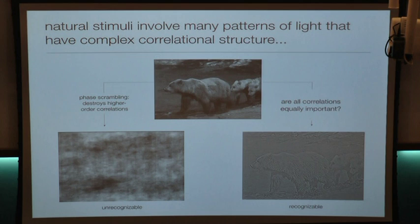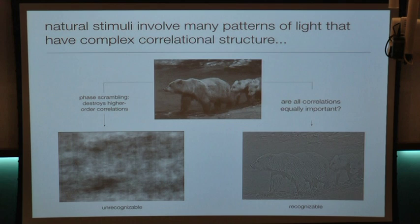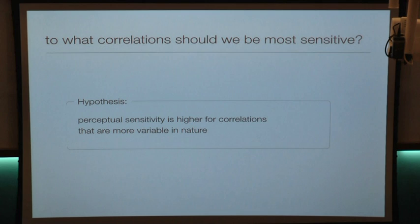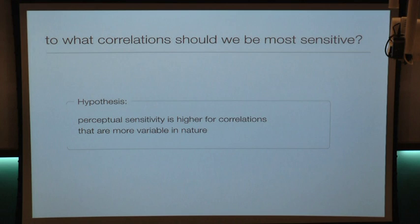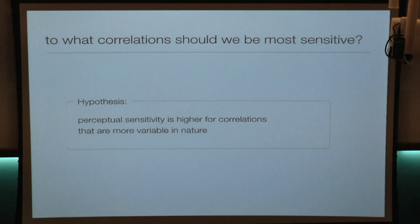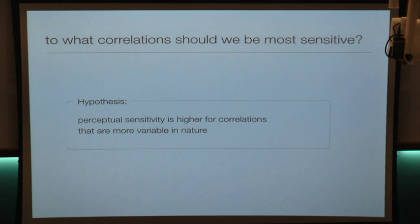So we know higher-order correlations are important. What we'd like to know is whether some correlations are more important than others. To explore this, we formed a particular hypothesis: we should be visually sensitive — have high perceptual sensitivity — to patterns or correlations that are more variable in the natural world. The basic intuition is that if we take many measurements of, say, a three-point correlation across visual scenes and the measurement always has the same value, a particular instance won't tell us anything informative. But if measurements vary greatly, any particular measurement could tell us something informative about what we're seeing.